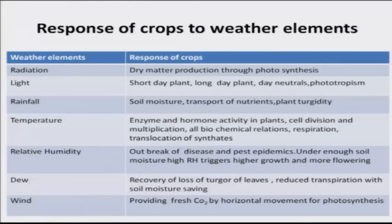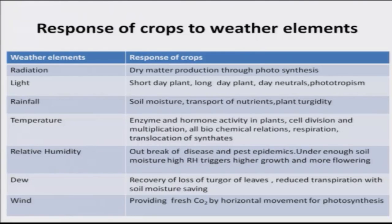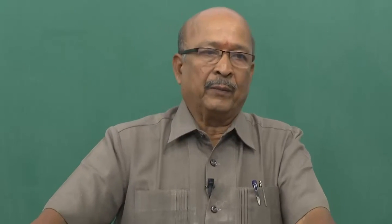Rain forms soil moisture and enables transport of nutrients and plant agility. About 80% of the plant body contains moisture — without it there is no turgidity. Rainfall is very important, whether from groundwater or directly through rainfall. Temperature affects enzyme and hormone activity in plants, cell division, multiplication, and all biochemical reactions including respiration, translocation, and photosynthesis. Respiration is very important in relation to temperature. If the night temperature is more than the optimum — for example, 30 degrees instead of 24 to 25 degrees — then the photosynthates stored earlier are used for respiration, resulting in production loss. Temperature has both direct and indirect effects.